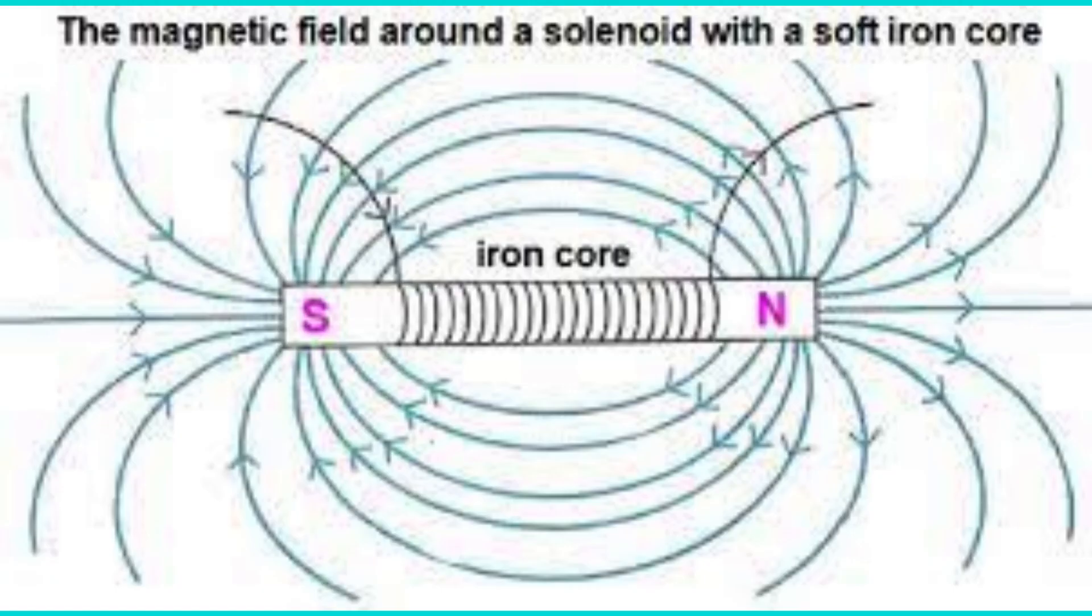The coil is wound around a soft iron core. The magnetic flux generated by the coil results in formation of north and south poles in the plunger.